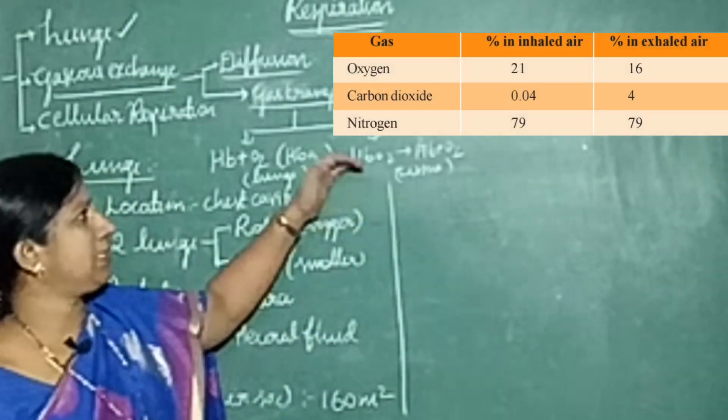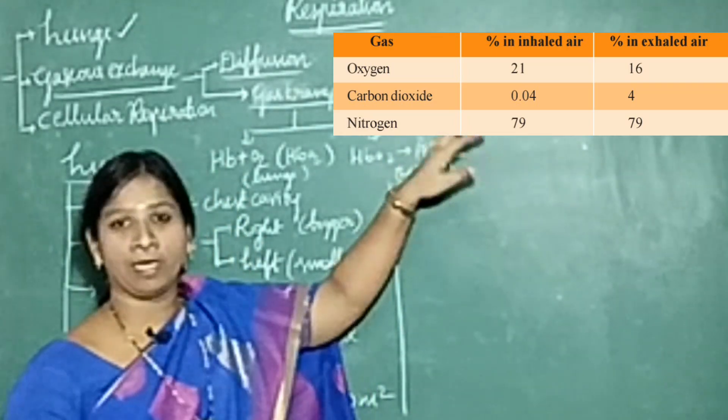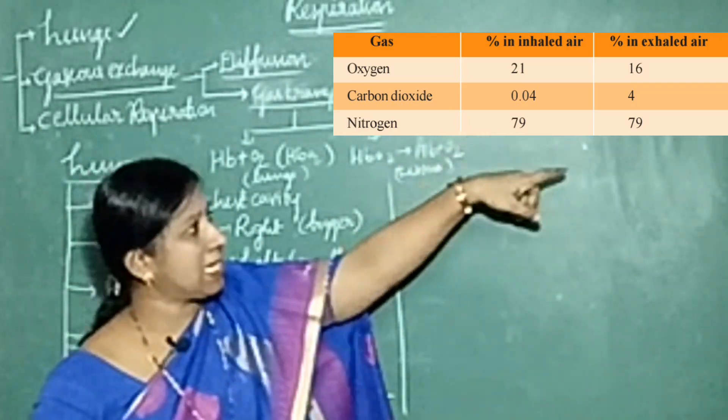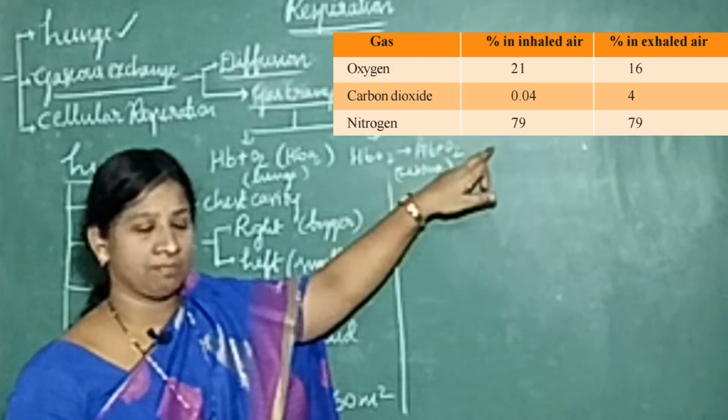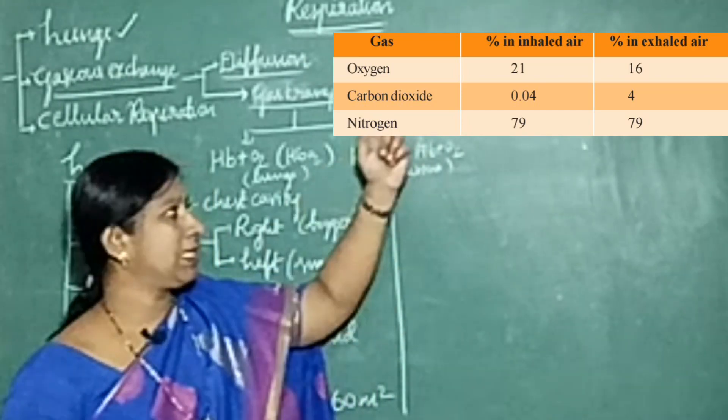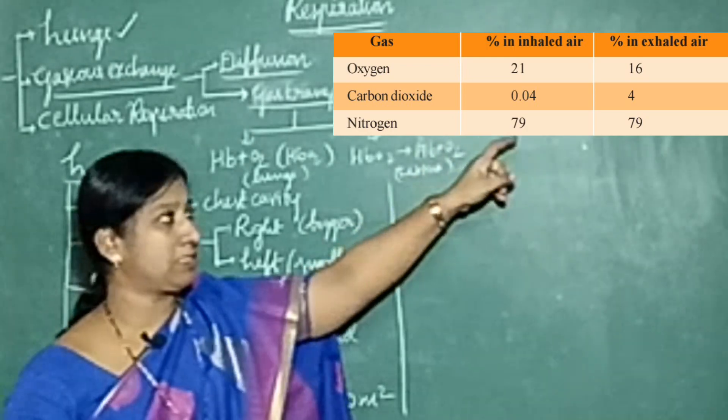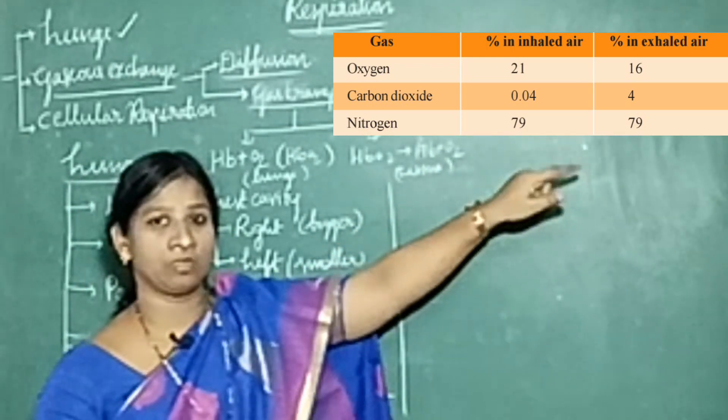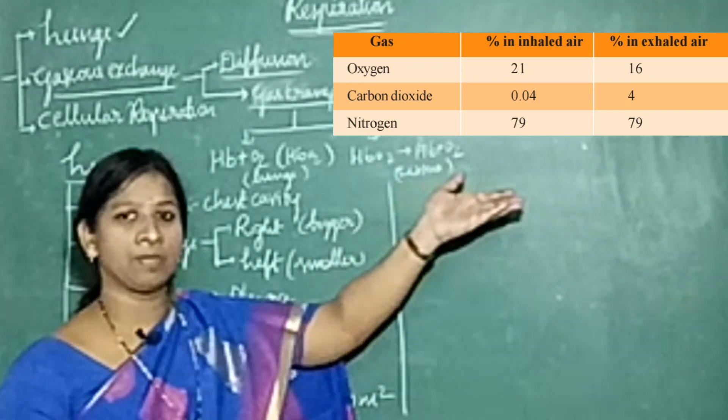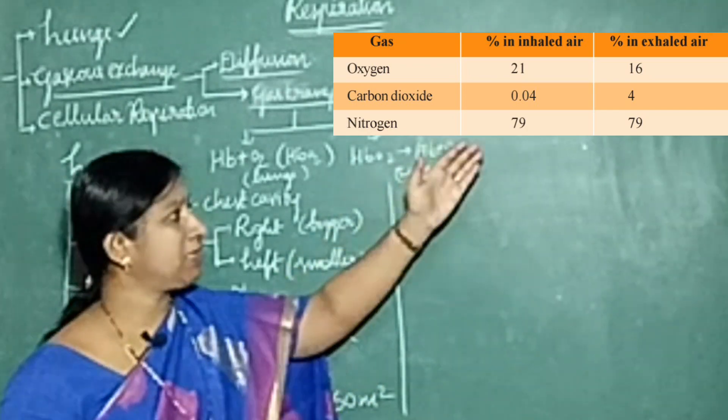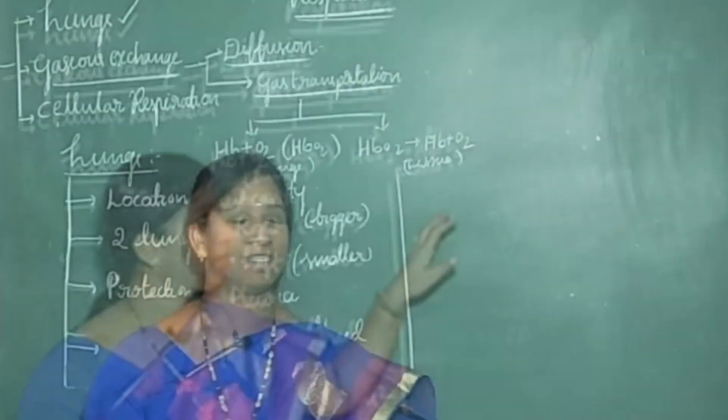Before going to that, just see when we inhale the air, basically we will take carbon dioxide, oxygen and nitrogen. Once when we exhale the air, see oxygen percentage - when we are inhaled it is 21%, but when exhaled it is 16%. In the same manner, carbon dioxide in the inhaled air it is just 0.03%, but see exhaled air is 4.4%. You can understand how the carbon dioxide is added during the process of exhalation. But whereas nitrogen, how much we inhale, the same percentage of gas will be exhaled.